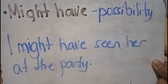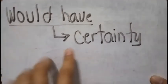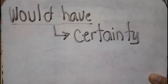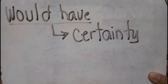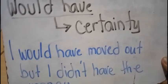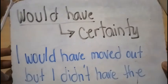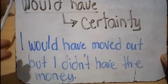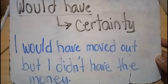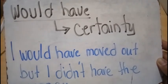Next, we have would have. We use would have when we are sure about something — when there is certainty about something that would have happened in the past. Example: 'I would have moved out, but I didn't have the money.' I was certain that I would have moved out of the apartment, but it didn't happen because I didn't have money. So, would have refers to something we're certain was going to happen in the past, but it just didn't happen.